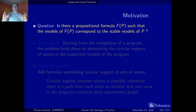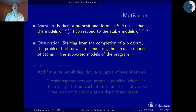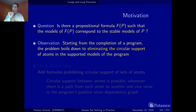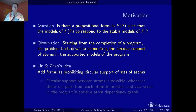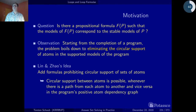We managed to isolate the models called supported models, which are the models of the completion of a program. But the observation was that if we take the models of the completion, we have to eliminate the circular supports that give infinite derivations. Here there is a fundamental idea by Lin and Zhao — two Chinese researchers from Hong Kong — whose idea was to extend the notion of completion by also adding additional formulas that prohibit circular support of atoms. To make this precise, we look at the positive atom dependency graph.